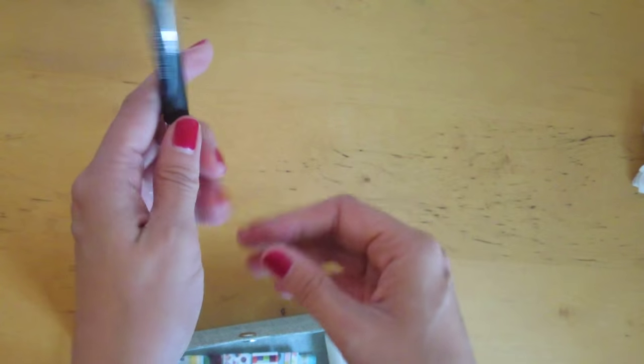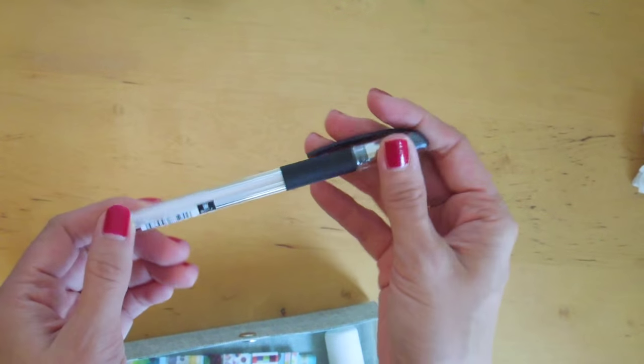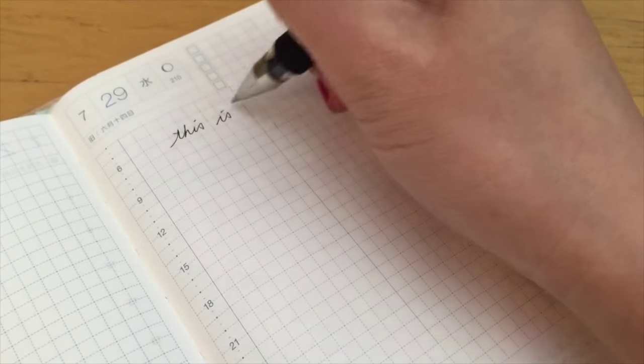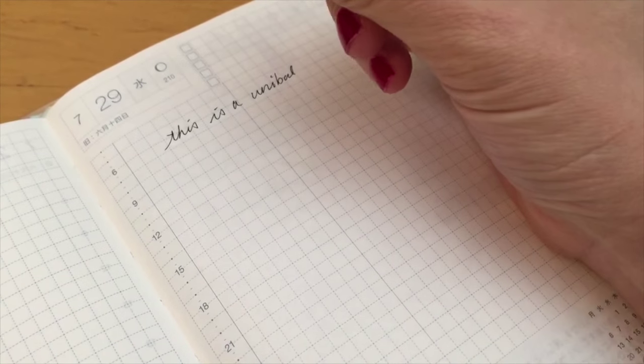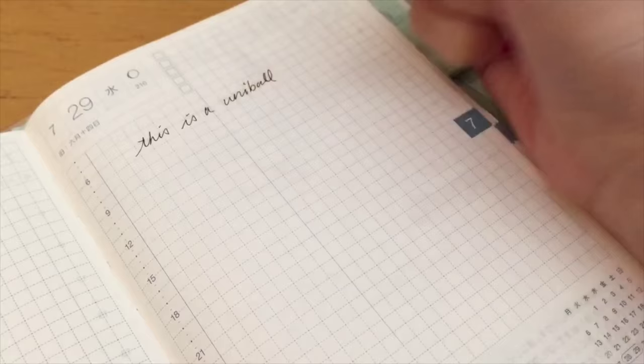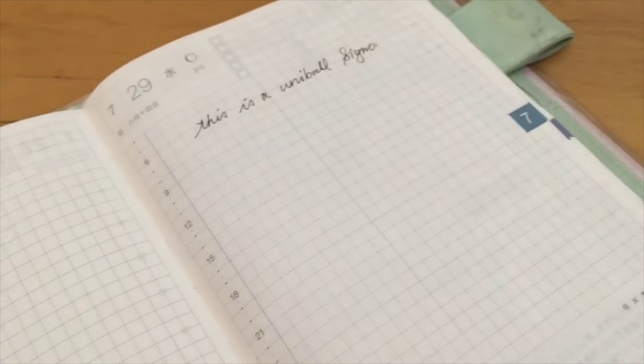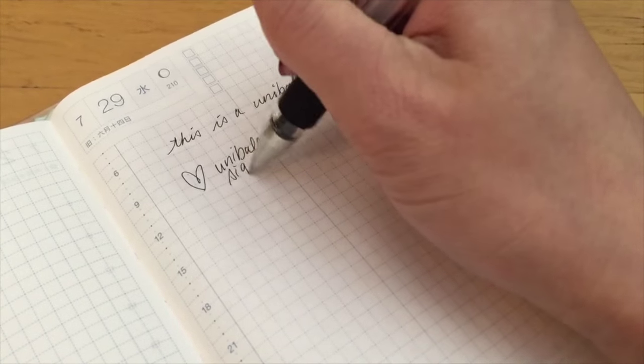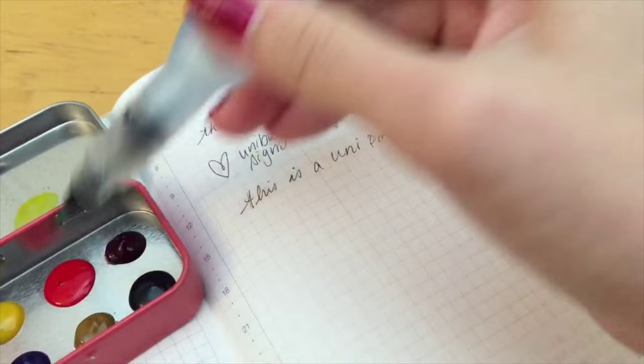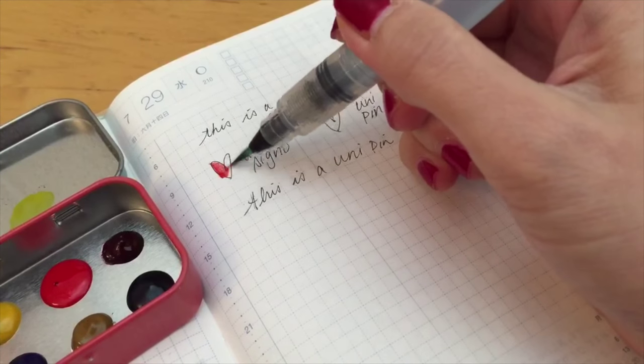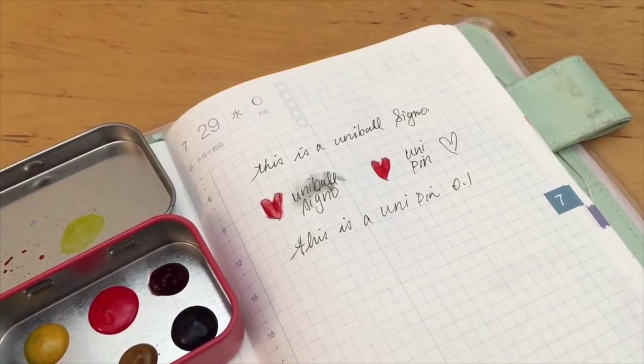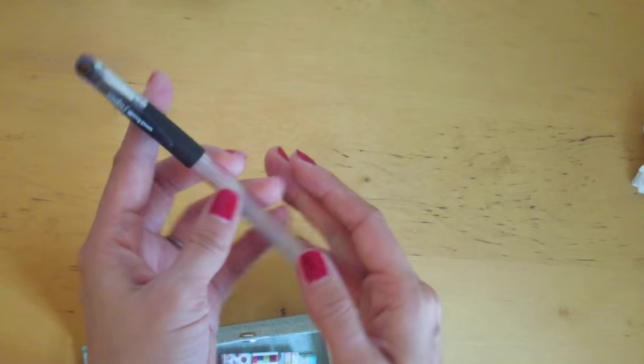Of course I have to have my Uniball Signo in the 0.28 Fine Tip Black. I've been through so many of these. I think I'm already running out of ink on this one. I really love Fine Tip especially for my Hobonichi Techo because it is the A6 size. But I keep on forgetting that when I journal, I try to do my writing with this pen and drawing with another waterproof ink. And sometimes I forget and I add some watercolor and then it smudges. So I have to remember to just use this for writing.